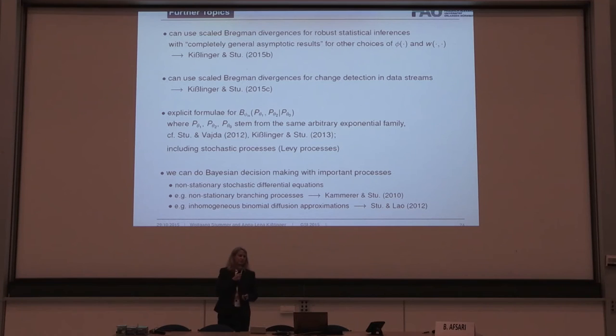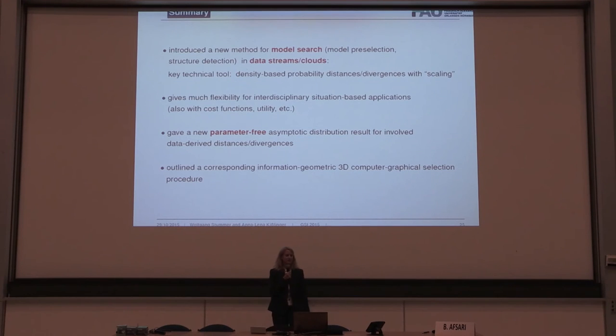Apart from the UMSPD, we can use the scaled Bregman distance for robust statistical inferences with completely general asymptotic results for other choices of phi and W, as well as for change detection in data streams. We can do Bayesian decision-making with importance sampling, and furthermore, we have explicit formulas for the scaled Bregman power divergences where all three measures stem from the same arbitrary exponential family. So, I'm at the end of our talk. I may summarize. We introduced a new method for model search and data stream clouds, which gives much flexibility for interdisciplinary situation-based applications. Then, we gave a new parameter-free asymptotic distribution results, and we outlined the corresponding information geometric 3D computer graphical selection procedure. Thank you.